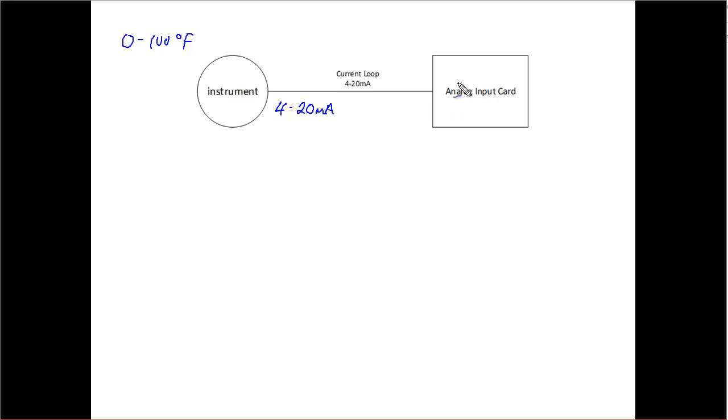The analog input card in the computer or the control device is going to convert that to a voltage that's then going to go into our A to D converter. Let's say that we're measuring 50 degrees Fahrenheit and let's say that this is a 20-bit card. It's a 20-bit analog to digital converter.